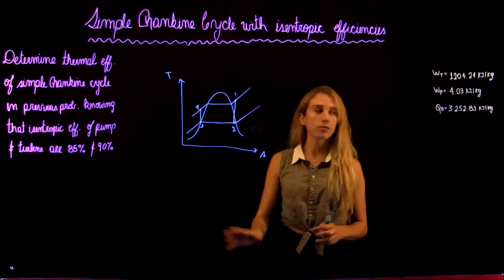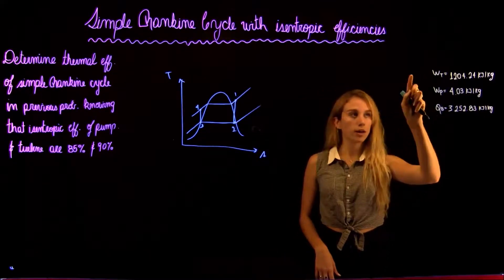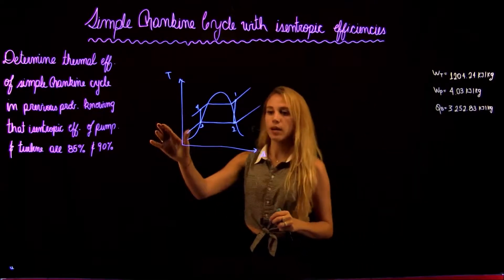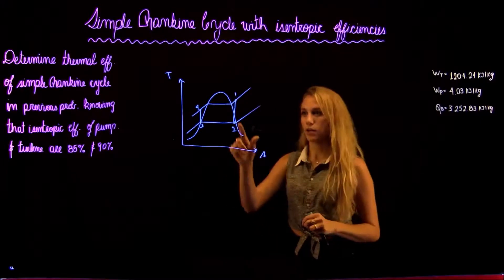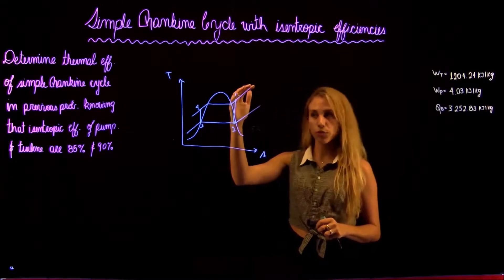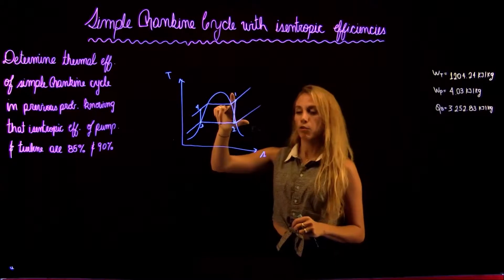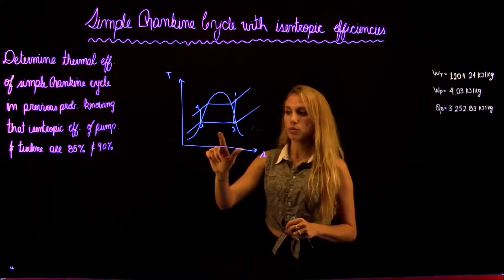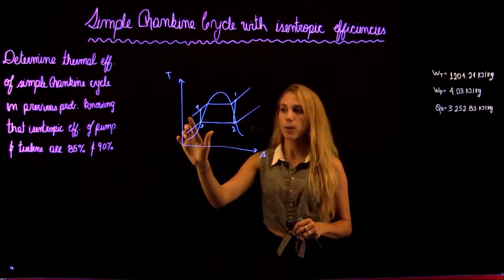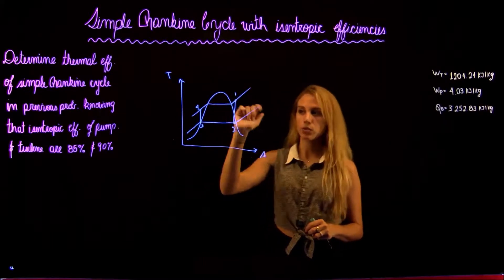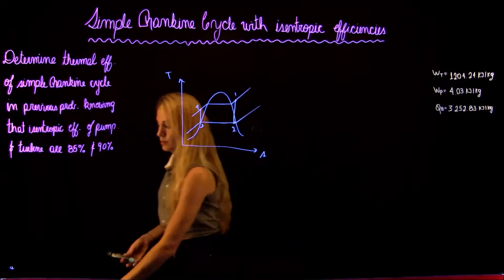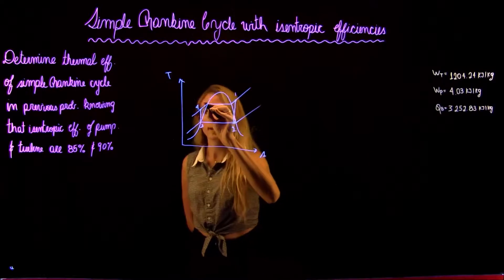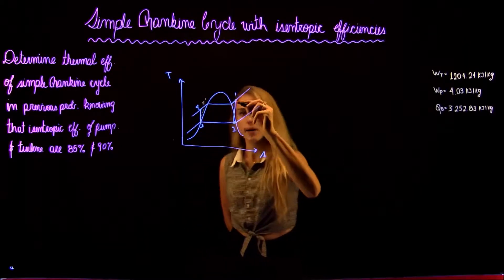In the previous problem, we found the work of the turbine, pump, and the heat input in the boiler. We also have a TS diagram that looks something like that. We have state 1, which is before the turbine. The fluid expands to state 2, then it goes through the boiler to 3, then it gets pumped to 4, and then it goes back to the boiler. This is assuming a perfect isentropic process.